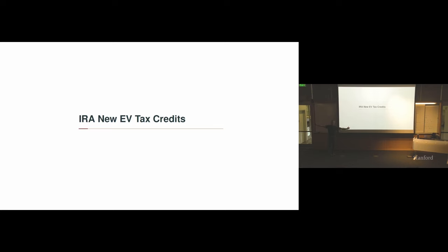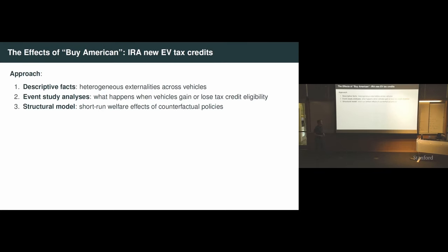With that big picture overview, let me dive into our work on the new electric vehicle tax credits. What this paper does is we present some descriptive facts on market trends, and in particular, the difference in externalities across different vehicles. Then we'll show you some event study analyses, basically what happened to vehicle markets after the IRA was passed. And third, we'll present what economists call structural models, basically a discrete choice model that allows us to simulate what the market would look like with or without the IRA and with different modifications.